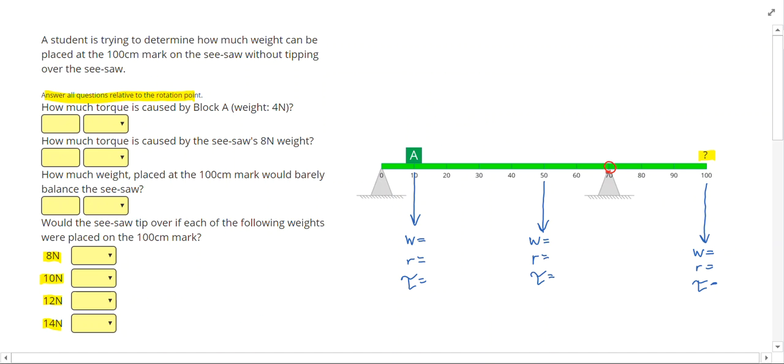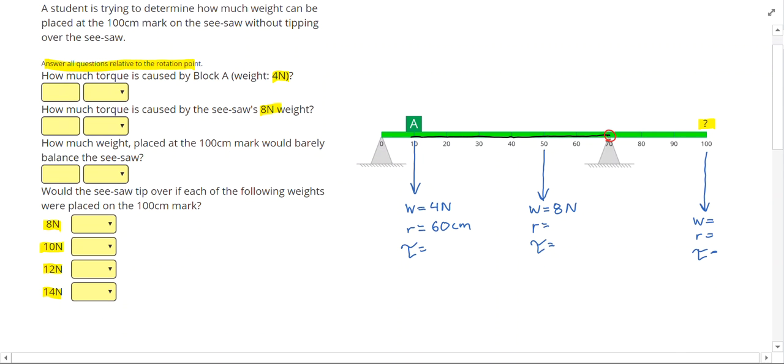Let's go ahead and start listing our given. It says block A is 4 newtons and the seesaw is 8 newtons. Then for the radius I'll count from the 70 centimeter mark: 10, 20, 30, 40, 50, 60 centimeters. Multiplying those I get a torque caused by A of 240 newton centimeters, and I can fill that in as my first answer.